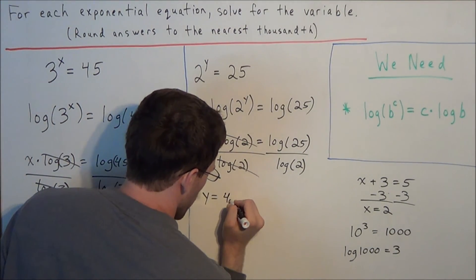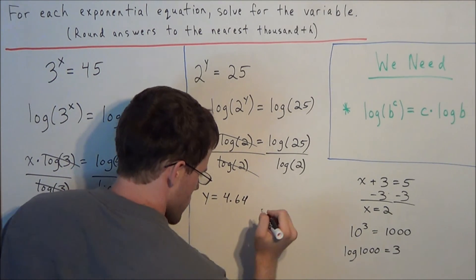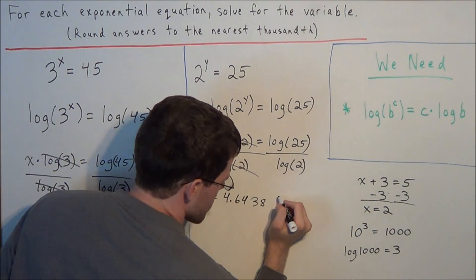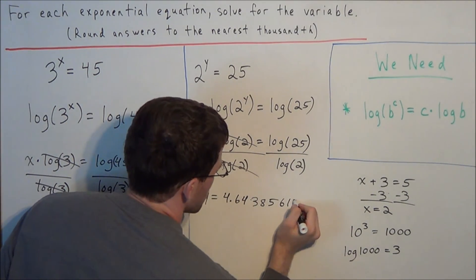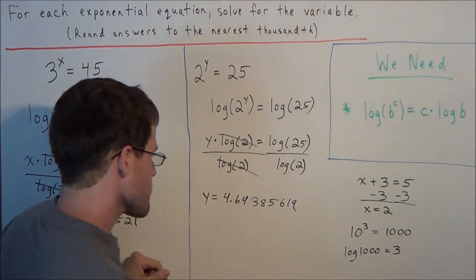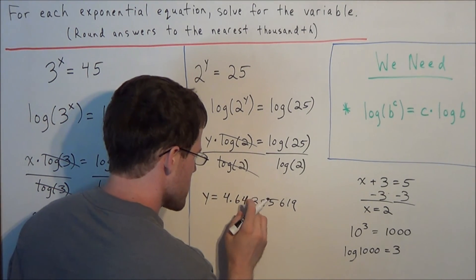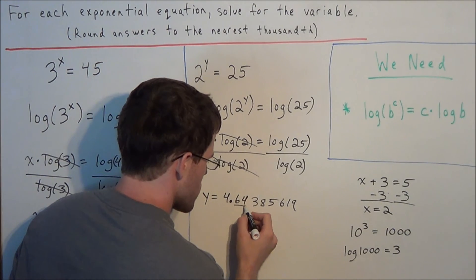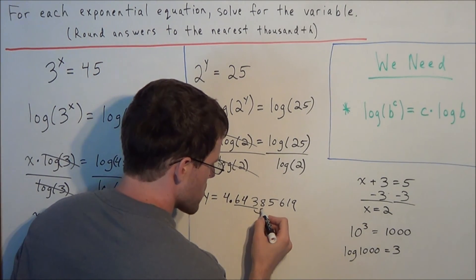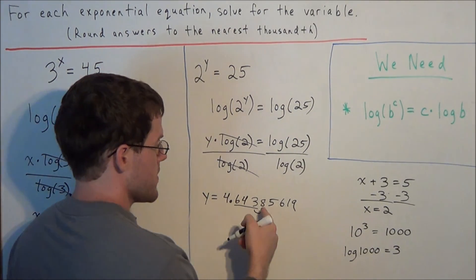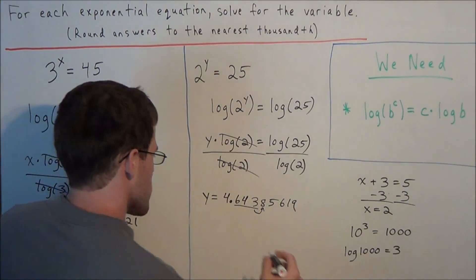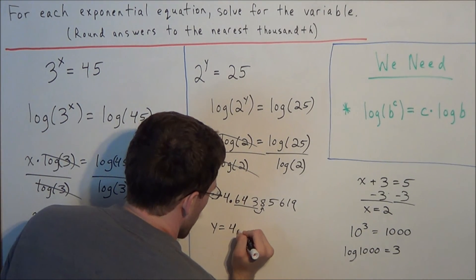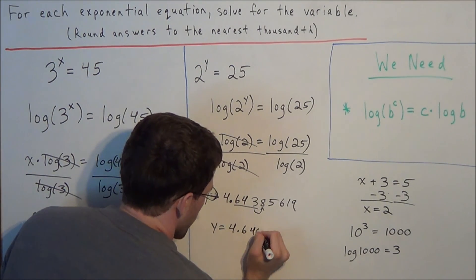You should get something like 4.64385619. But remember we want to round to the nearest thousandth. So we go three places after the decimal, we're going to go one, two, three, we look one digit to the right of the thousandth place and it's an eight which tells us to round up. So we have y equals 4.644.